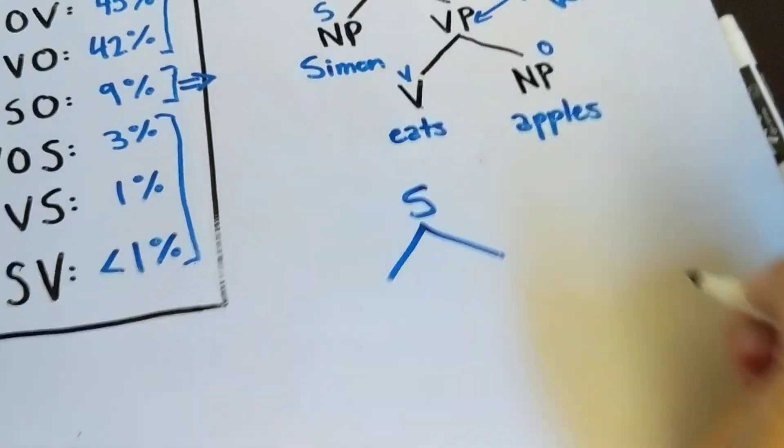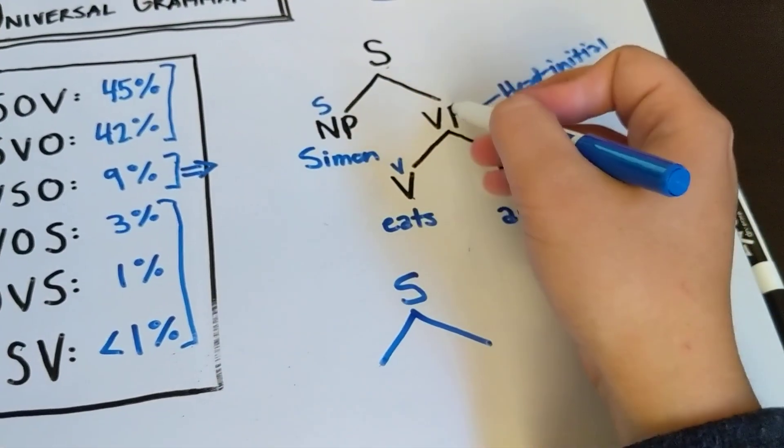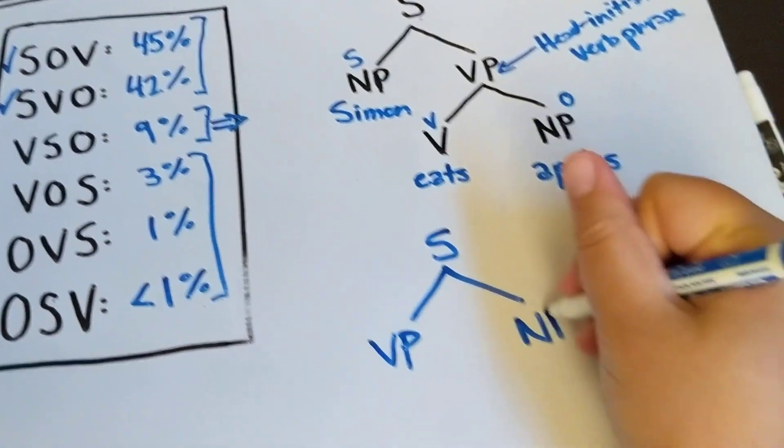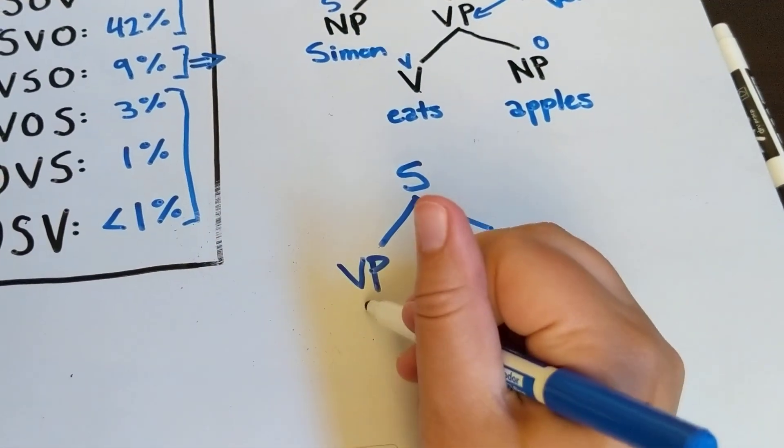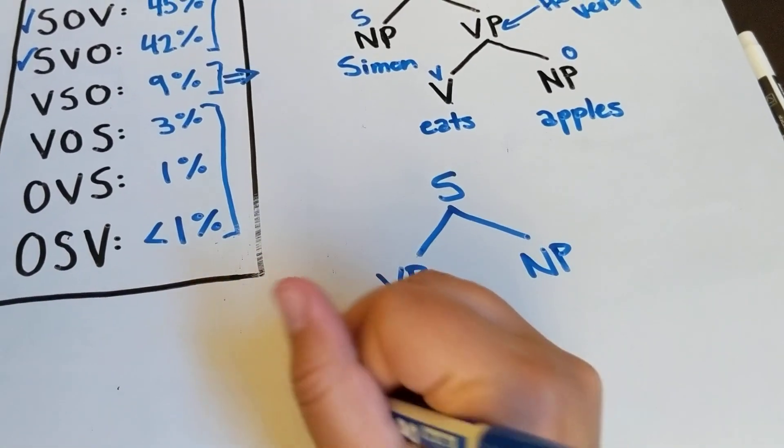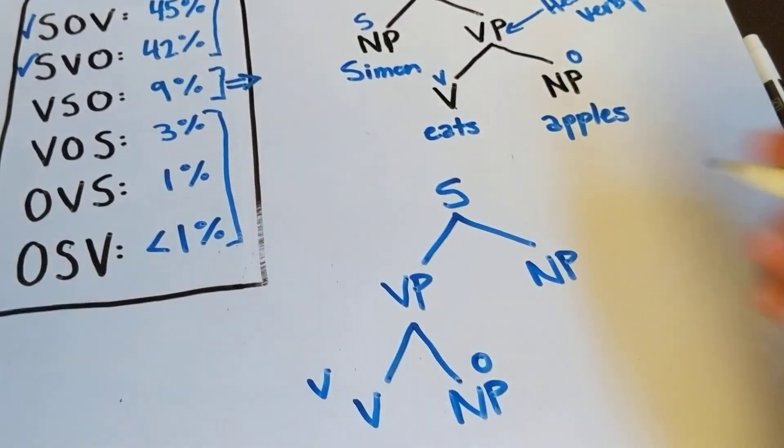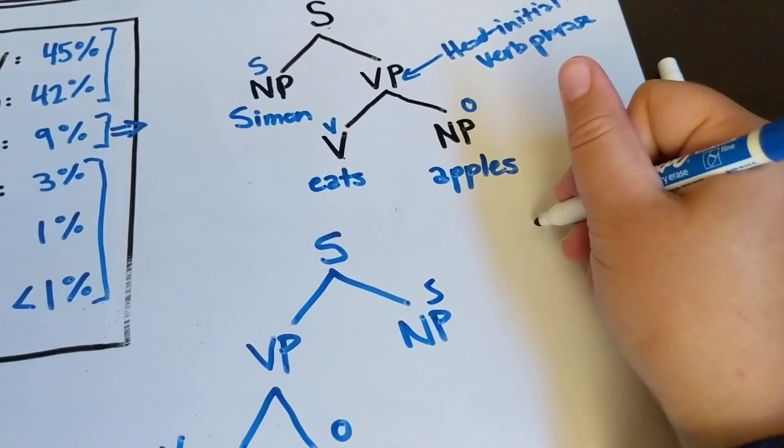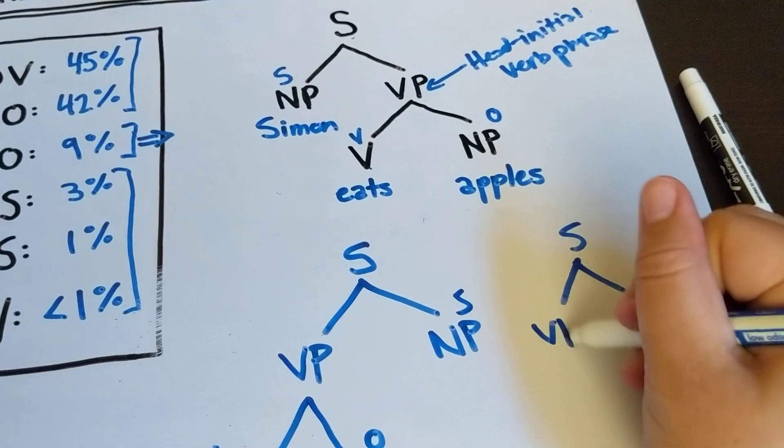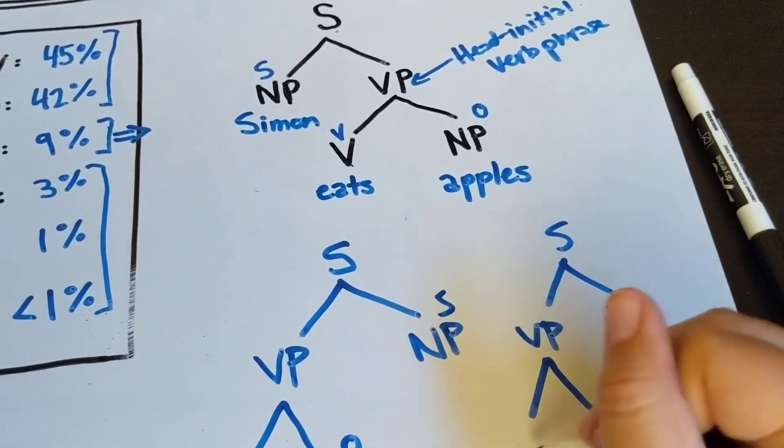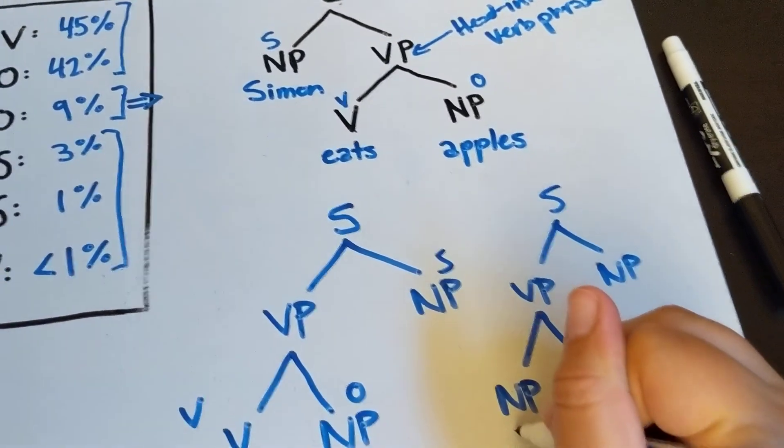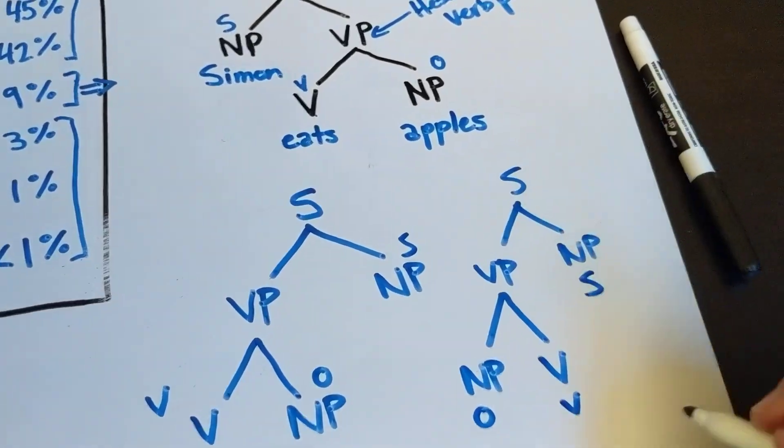And now we can have our head initial verb phrase, in which case we have this, which gets us a VOS word order, or we have this, which gets us an OVS word order.